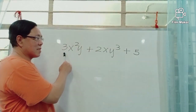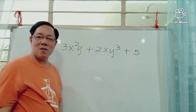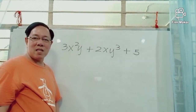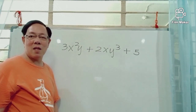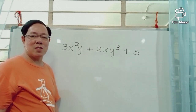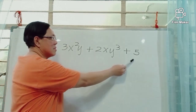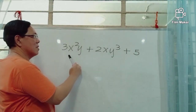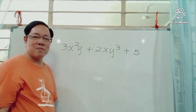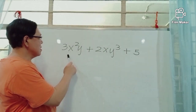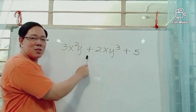The numbers 3, 2, and 5 are called constants, because in any algebraic expression their values will never change. This algebraic expression has three terms, and as we said, it is called a trinomial. Each term is connected by the operation addition.